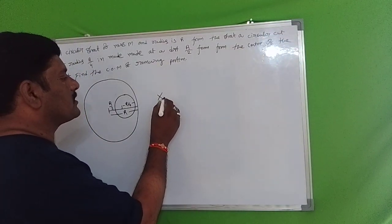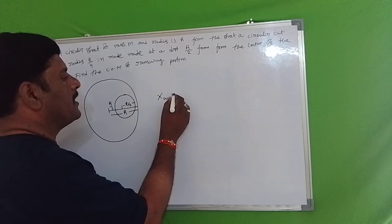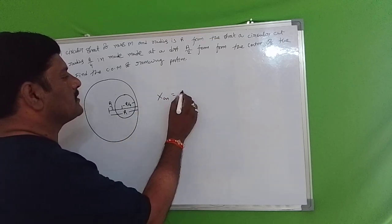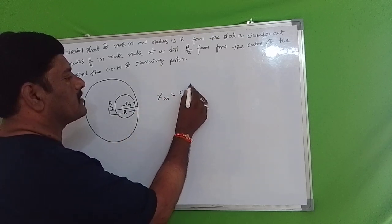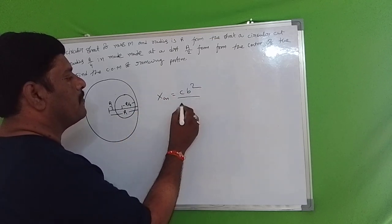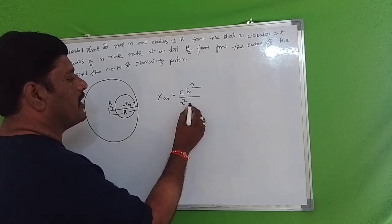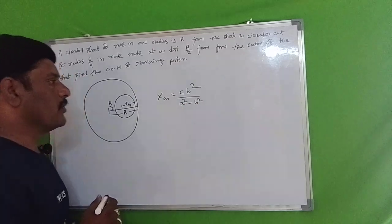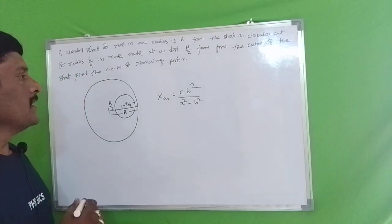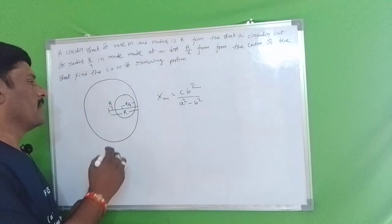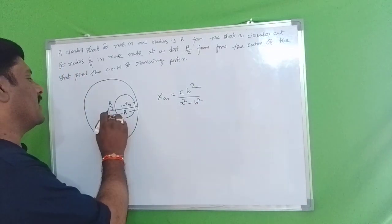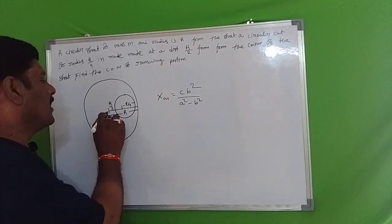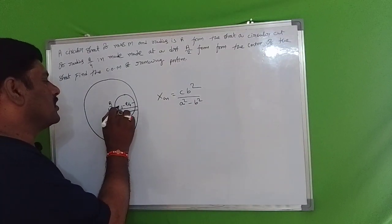We look at the shortcut method. Here, C and A — we look at the distance from the center. C is the distance to the cut portion from the center, and A is the original radius.